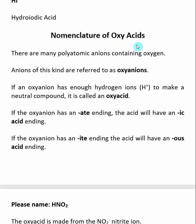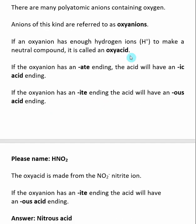Things get a little bit more complicated with oxyacids. When we were talking about polyatomics, you'll notice that many of them contain oxygen. These negatively charged polyatomics are actually referred to as oxy anions. So if you take an oxy anion and add enough hydrogen ions (H+) to make the compound neutral, then it is termed an oxyacid. The nomenclature of oxyacids is based off the name of the corresponding oxy anion or polyatomic. If the oxy anion has an 'ate' ending, when we turn it into an acid, it will have an 'ic acid' ending. Likewise, if the oxy anion has an 'ite' ending, the acid will have an 'ous acid' ending.